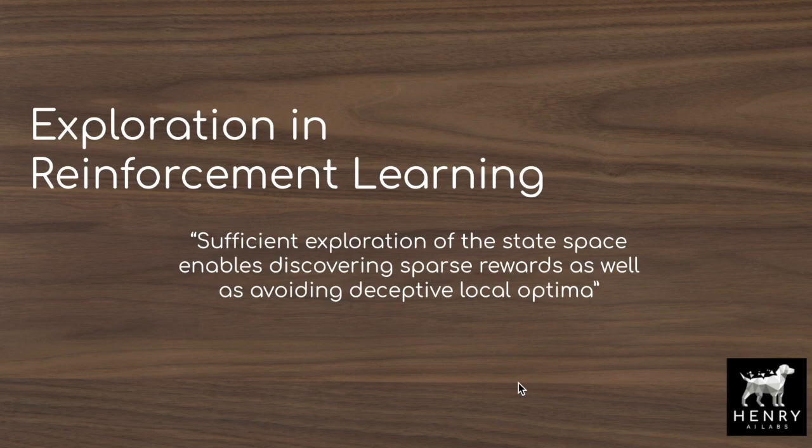Exploration is one of the core problems of reinforcement learning, due to sparse rewards and deceptive local optima. Sparse rewards describe situations in which most of the state-action pairs don't provide any feedback to the agent. For example, making an up move in a maze doesn't provide any reward, so you don't know how successful that action was. We need exploration in order to discover all the different states and rewards within an environment.